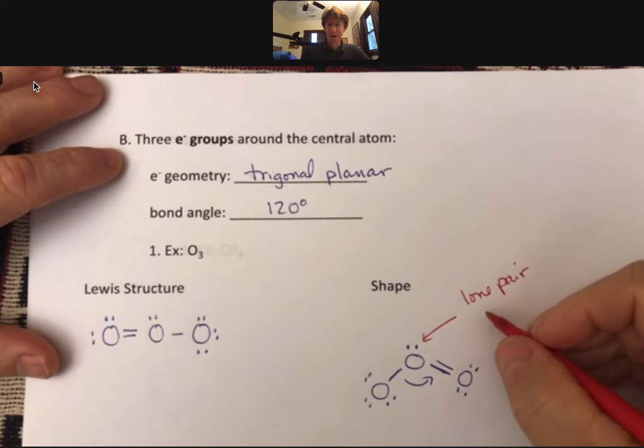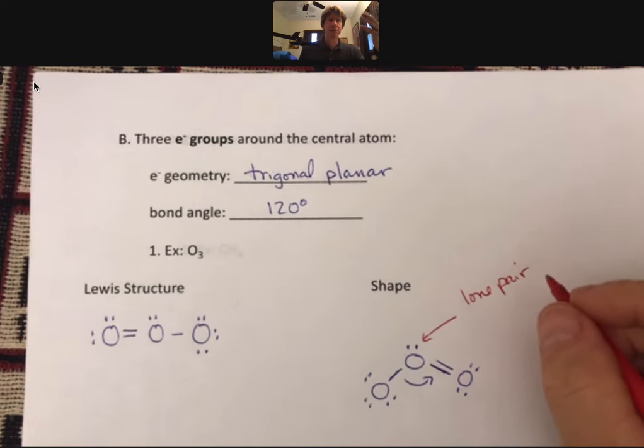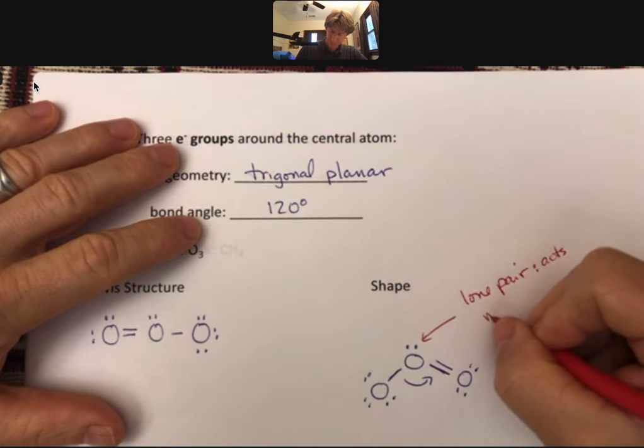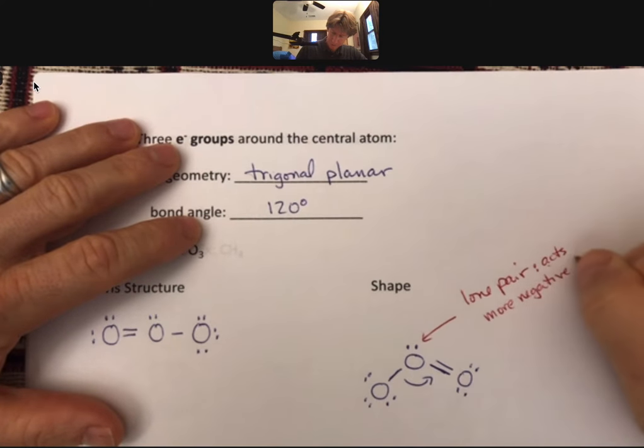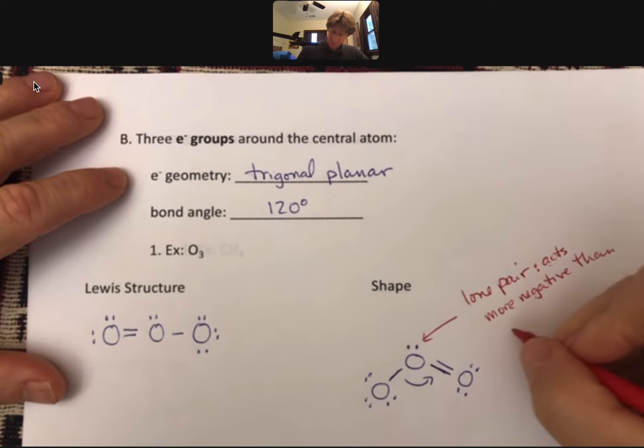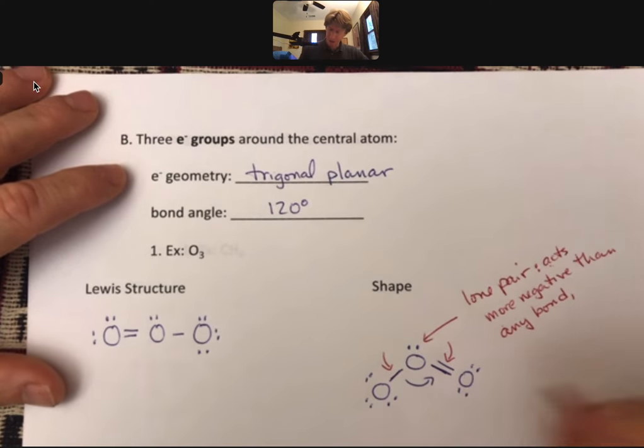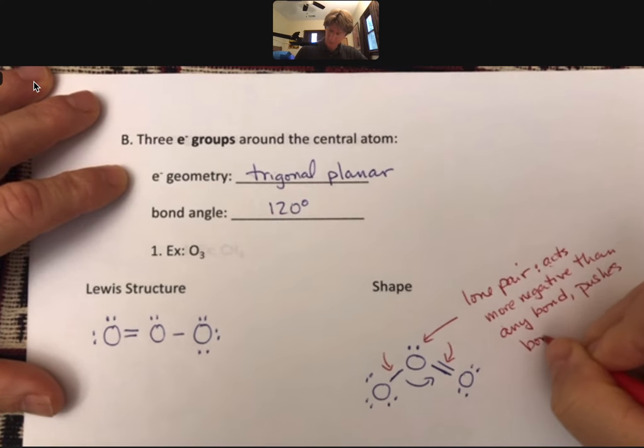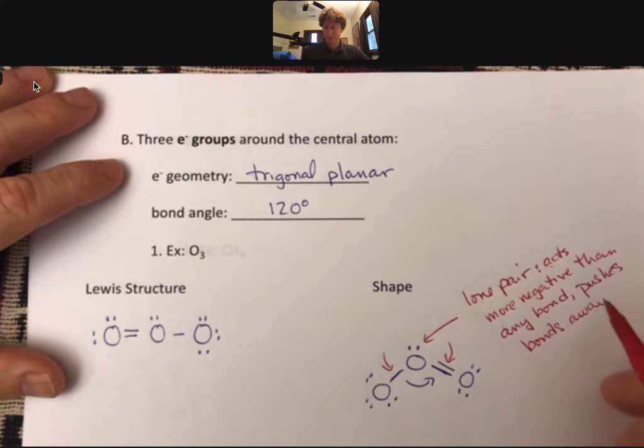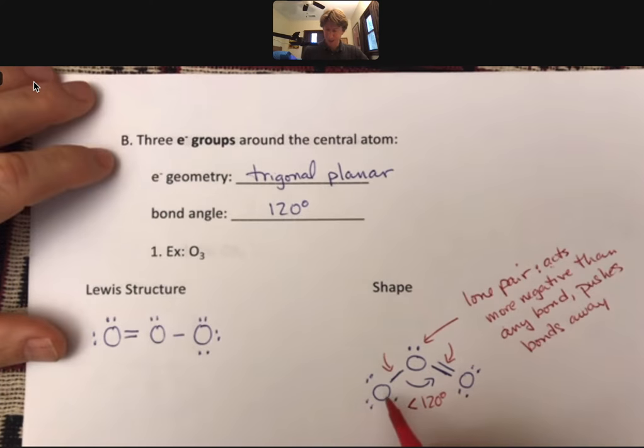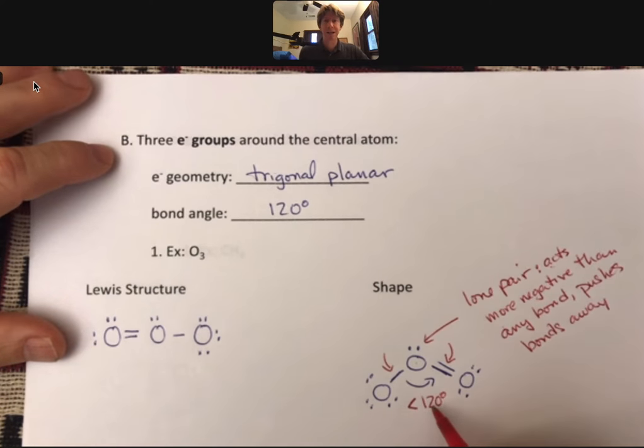Do you see this lone pair? This lone pair is actually a source of more negative charge, acts more negative than any bond, and it actually pushes these two slightly closer together. So it pushes bonds away. Meaning that whenever there's a lone pair of electrons, we won't give the answer 120 degrees. We will give the answer less than 120 degrees. Meaning the O-O-O bond angle is less than 120 degrees.